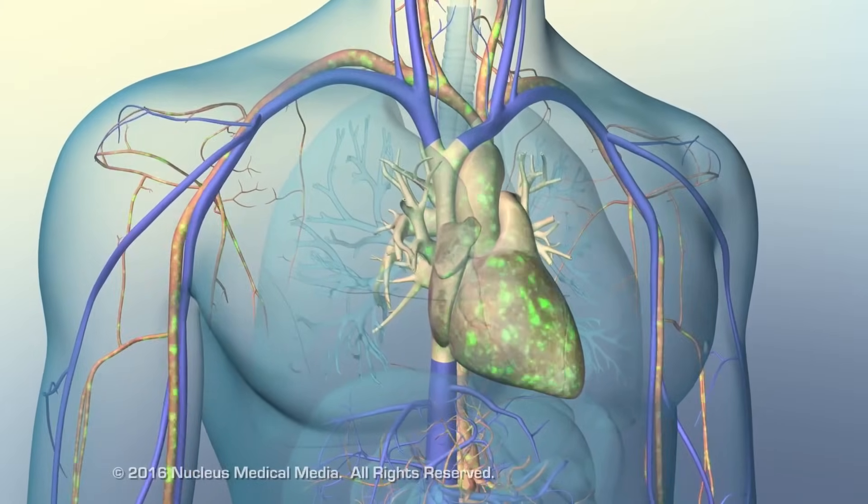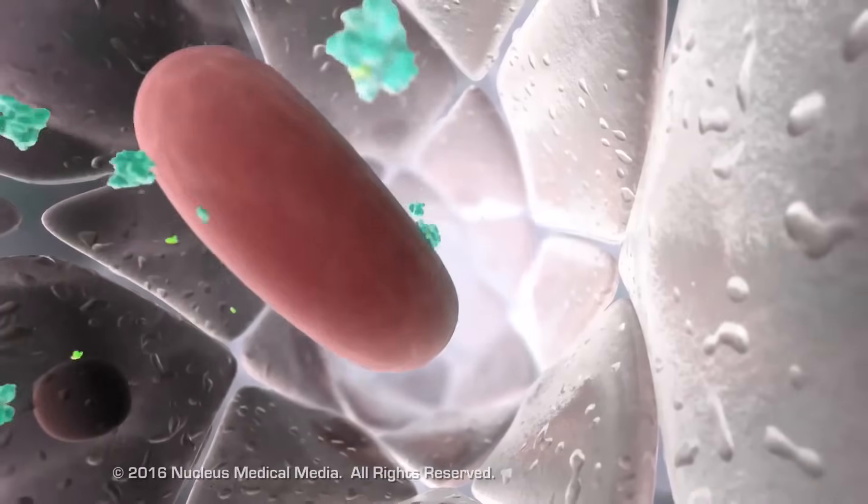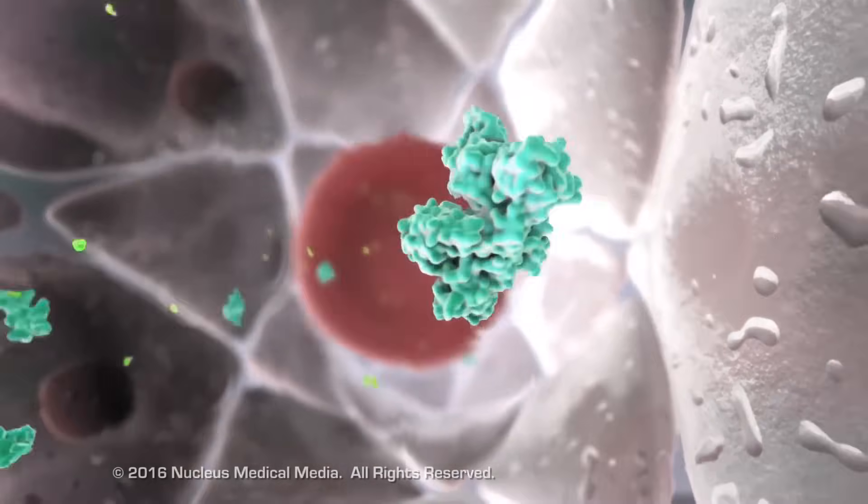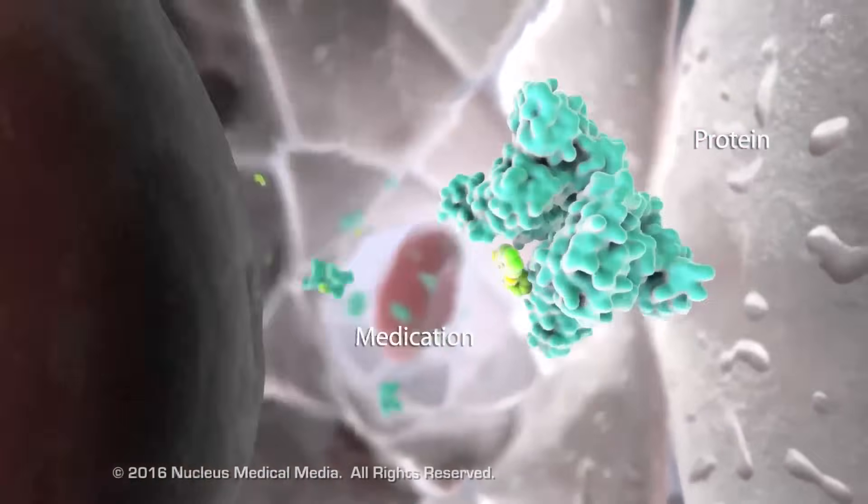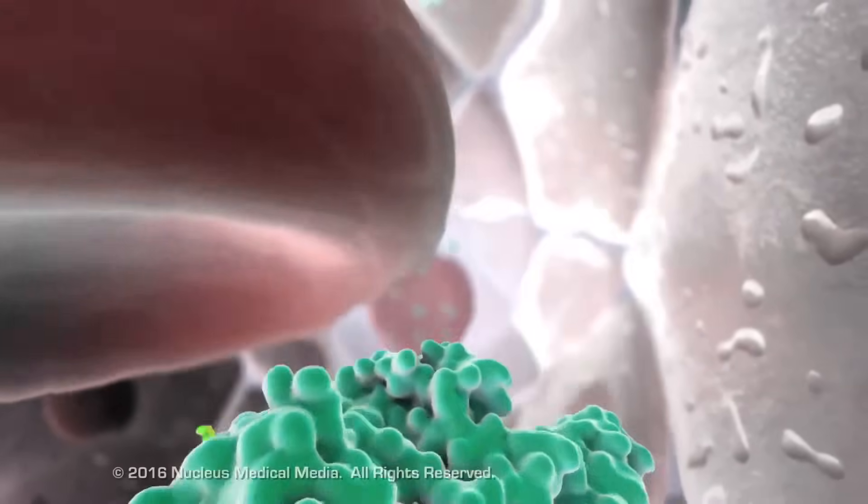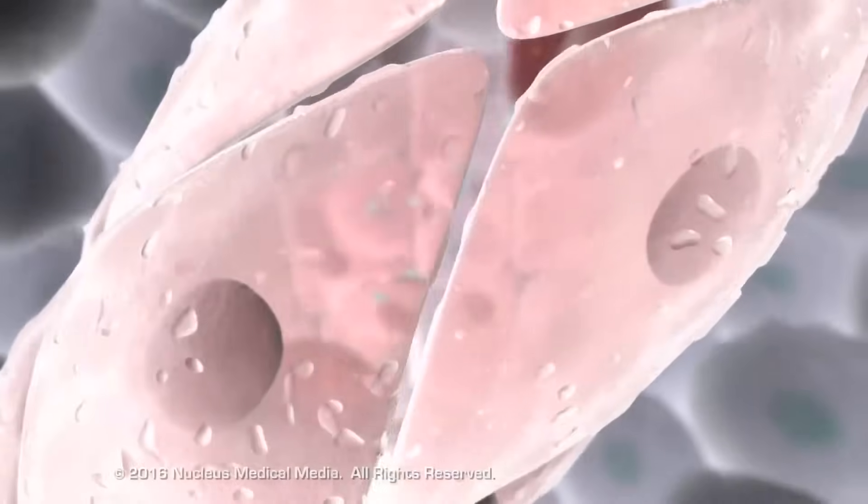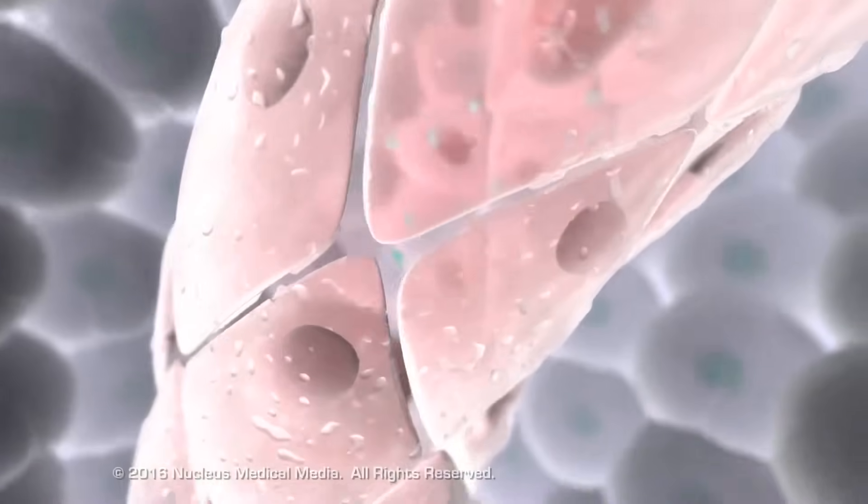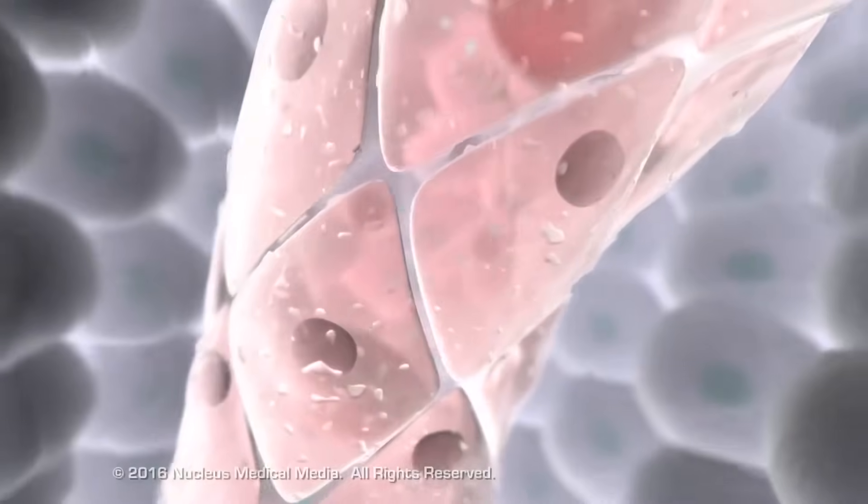In the blood, some medication molecules bind to plasma proteins to which they are attracted. In this bound state, medication molecules are unable to produce a pharmacological effect. In bound and unbound form, the medication flows through the arteries and into capillaries.